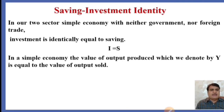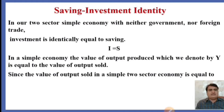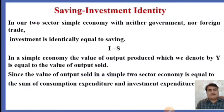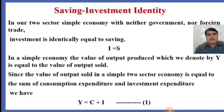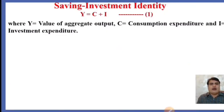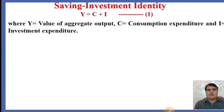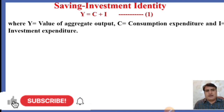In a simple economy, the value of output produced, denoted by Y (which represents GDP), is equal to the value of output sold. Since the value of output sold in a simple two-sector economy equals the sum of consumption expenditure and investment expenditure, we have Y = C + I. This means total output equals consumption plus investment, where Y is the value of aggregate output, C is consumption expenditure, and I is investment expenditure.